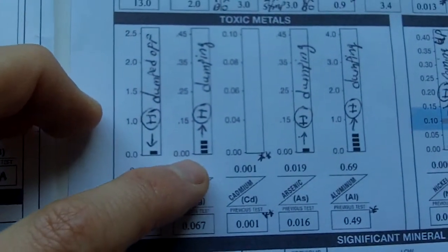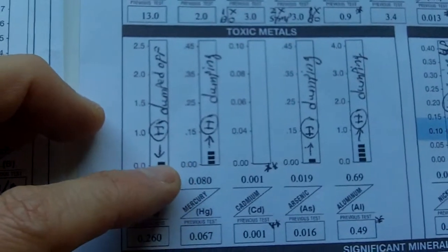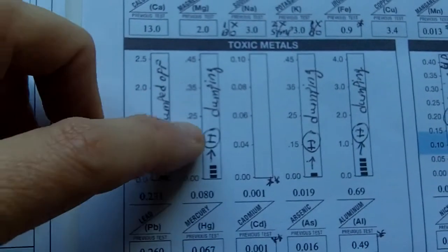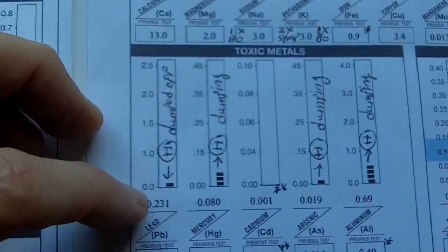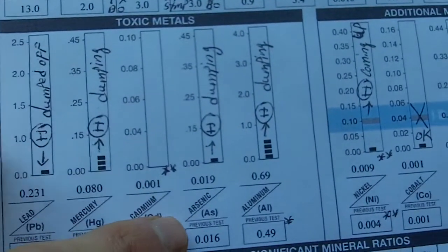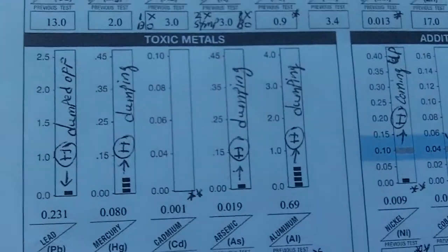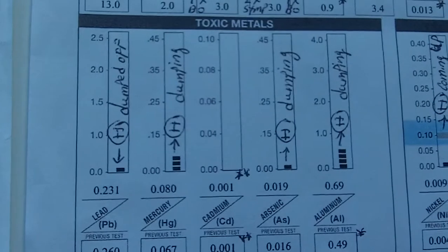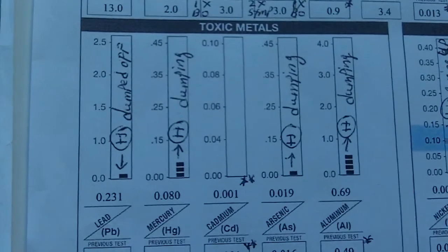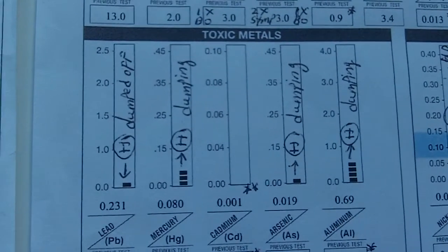You see, mercury is dumping and also lead. Arsenic and aluminum are starting to come up, so that's a good thing. A higher level is good because that means it's been excreted out of the body.